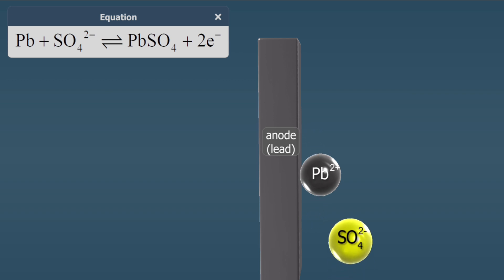The lead ions react with the sulfuric acid to produce lead sulfate. When the circuit is closed, electrons start flowing from the lead plate, the anode, to the lead dioxide plate, the cathode, through an electrical load connected to the battery.